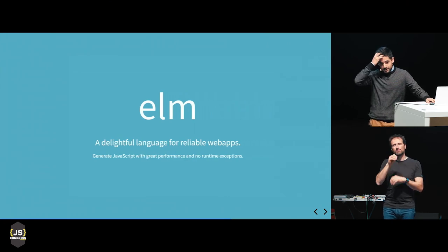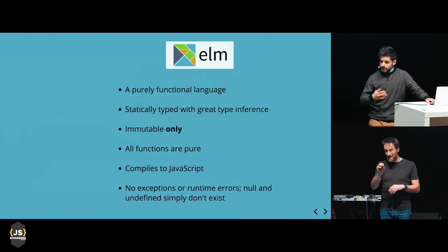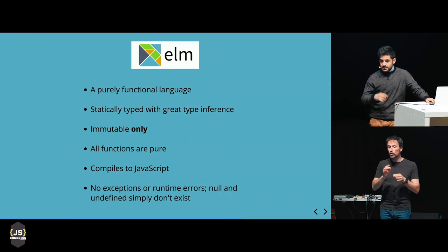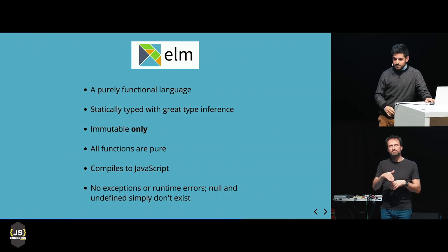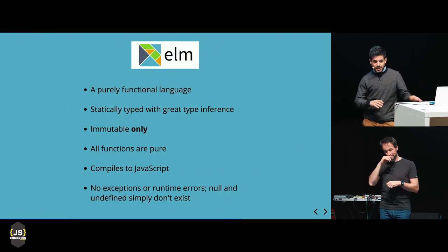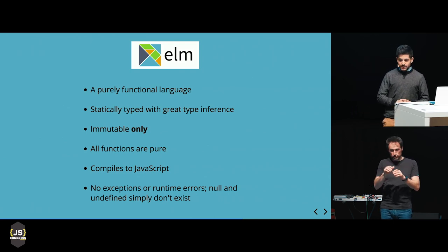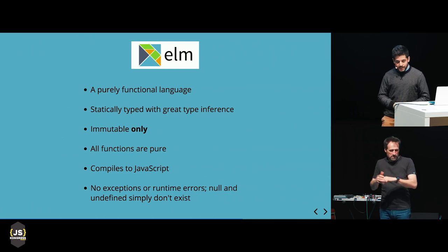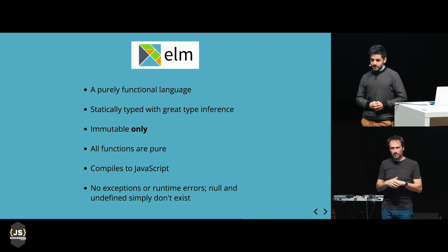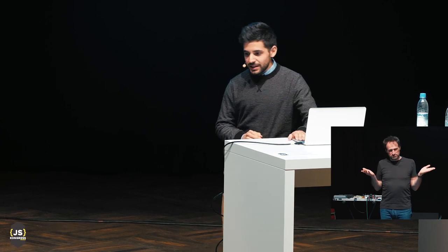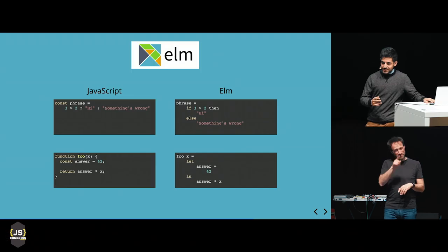Now I want to talk about Elm. Elm is a programming language — a functional language with static types. It is immutable only, meaning there is absolutely no mutability in the language. All functions are pure. It compiles to JavaScript. And here's one of the most interesting things: it has no exceptions, no runtime errors, and null and undefined simply don't exist.